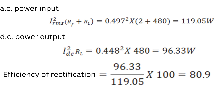To find rectification efficiency, we need AC power input and DC power output. AC power input = Irms² × (2Rf + RL) = 0.497² × (2×1 + 480) = 119.05 watts. DC power output = Idc² × RL = 0.448² × 480 = 96.33 watts. Rectifier efficiency = DC output power / AC input power = 80.99%.